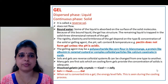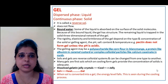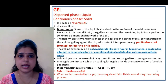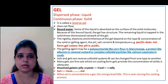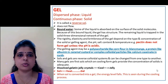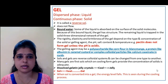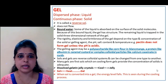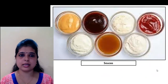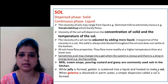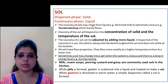Next is gel. In the gel colloidal system, the dispersed phase is liquid and the continuous phase is solid. It is also called reverse sol. Why reverse sol? Because you can convert it into sol. As I told in the earlier slide, if you heat it — gel is formed when gelatin is dissolved in warm liquid.